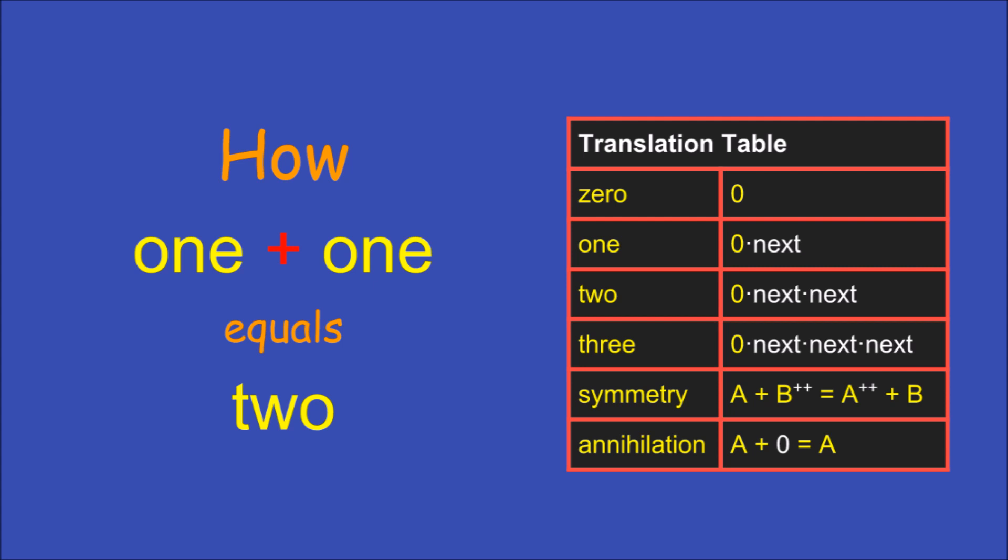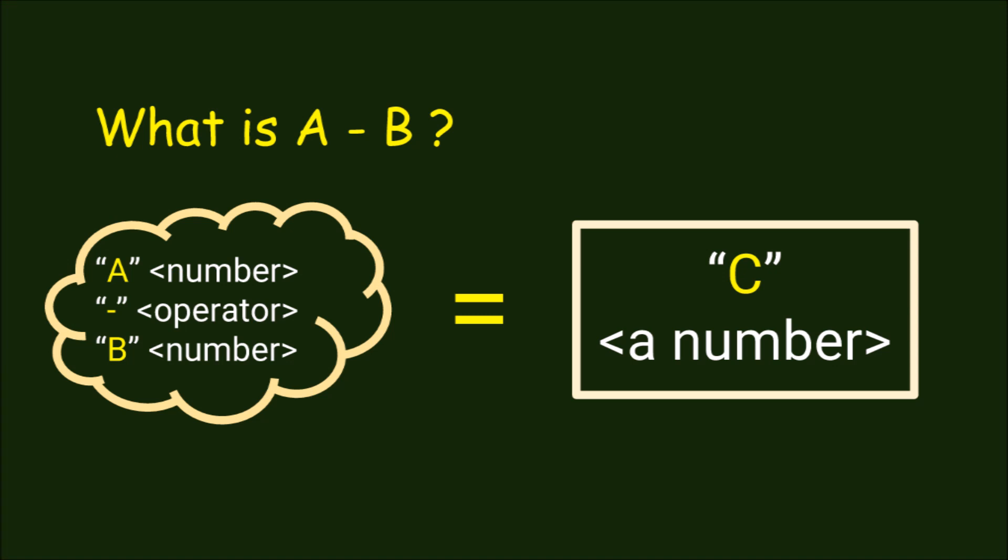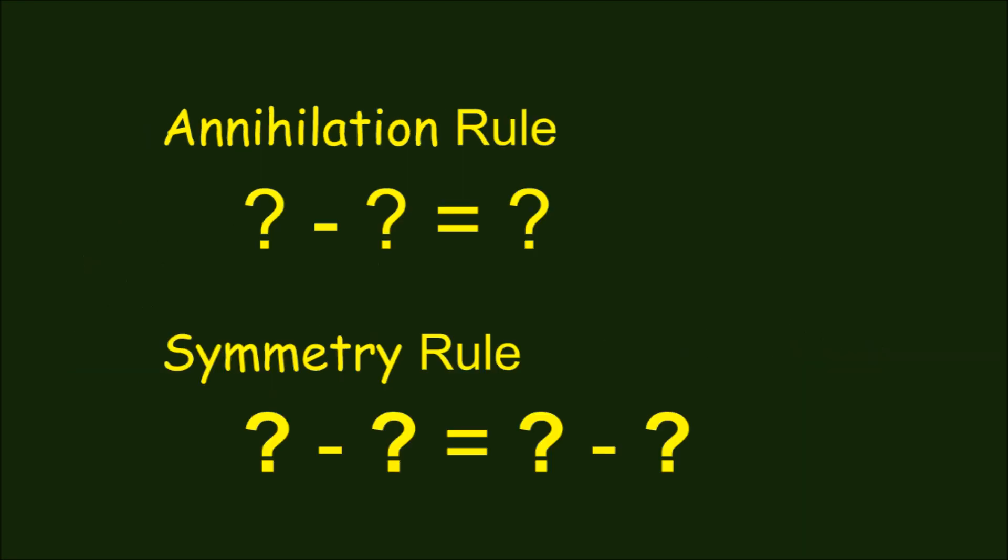I hope you found this interesting. If you want to test that you understood it, try to come up with the annihilation and symmetry rules for subtraction. Do these rules work for all pairs of numbers? Or do we need some new concepts to make arithmetic complete under the symmetries of subtraction?